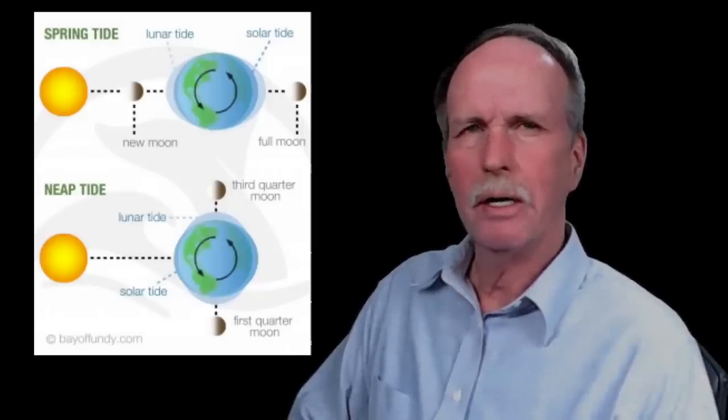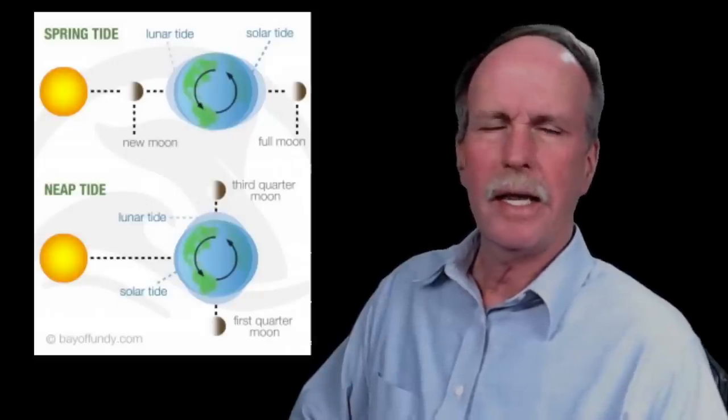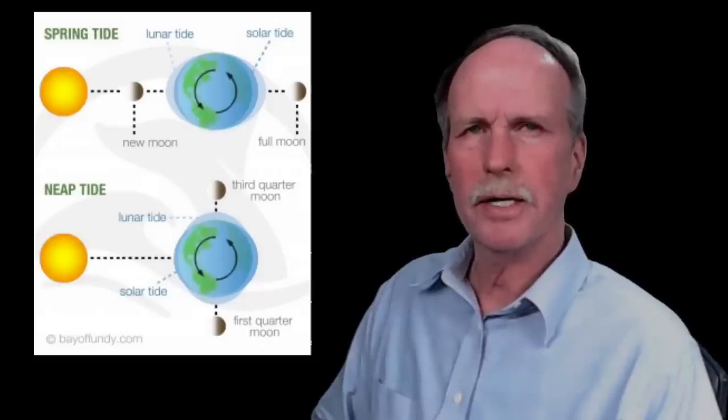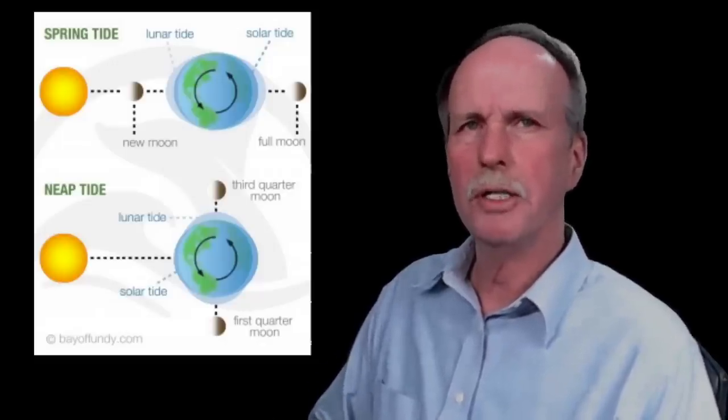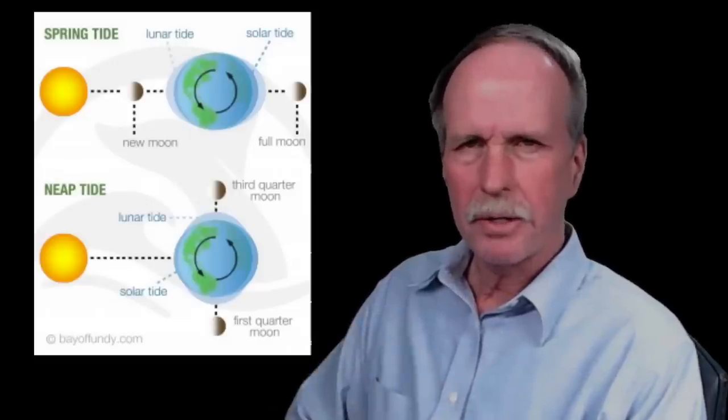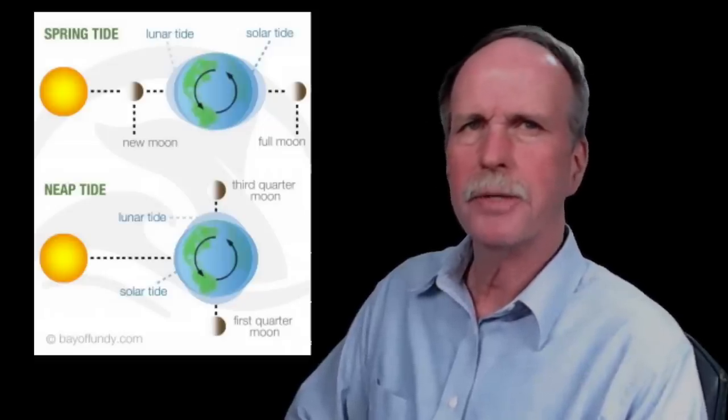When the Sun, the Earth, and the Moon are at 90 degrees to each other, the solar tide and the lunar tide are both trying to pull that bulge of water in two different directions and we get relatively small tides and those are called neap tides. Now, for extra credit, tell me what's wrong with this illustration. Put your answer in the comments.